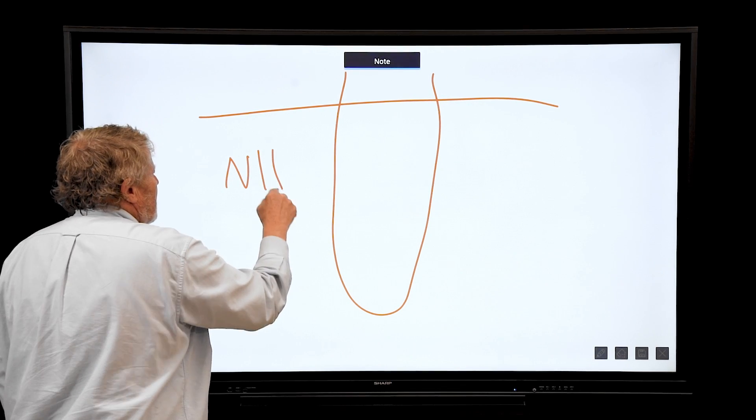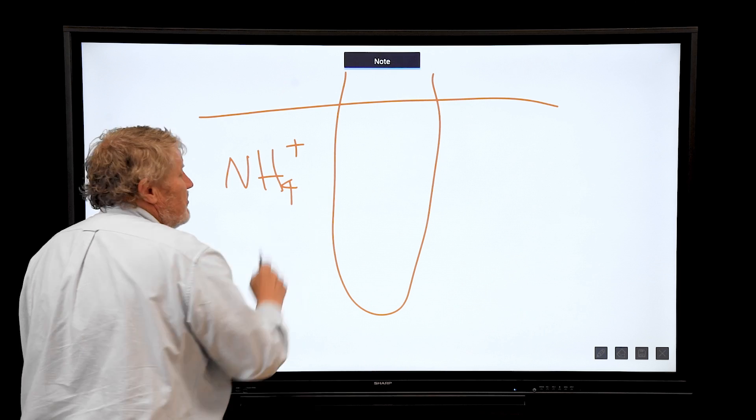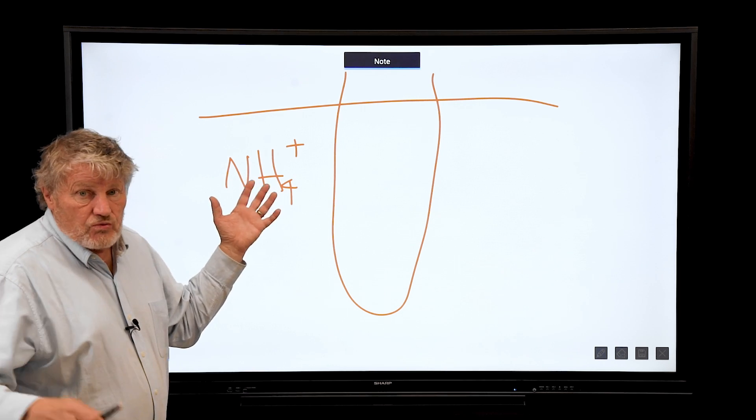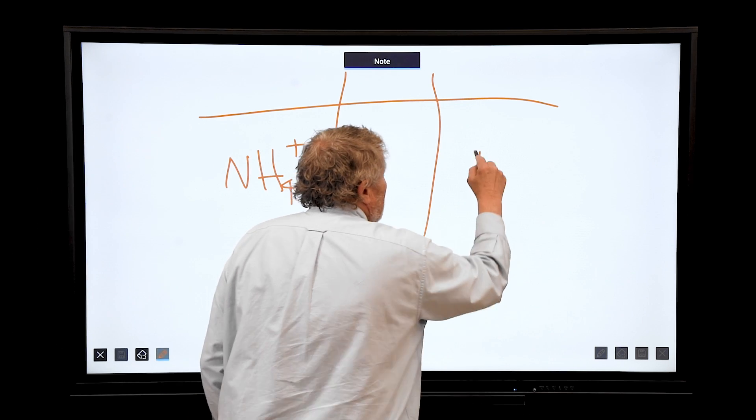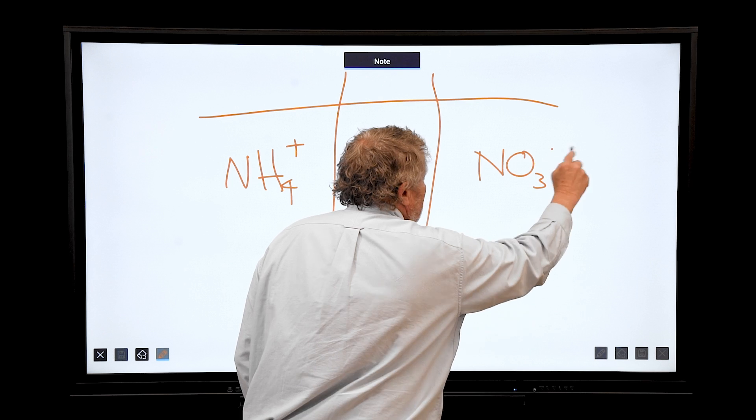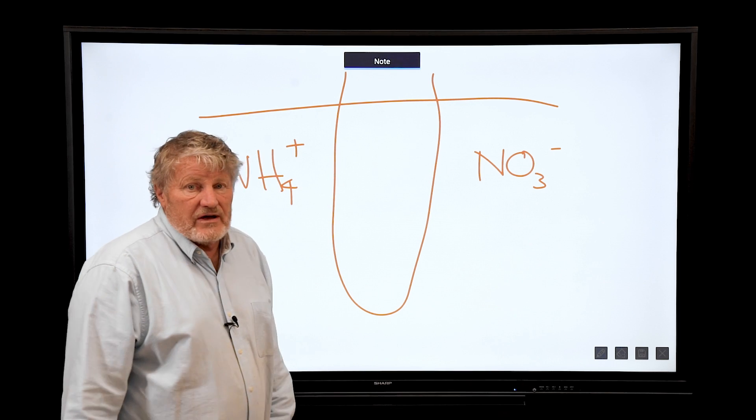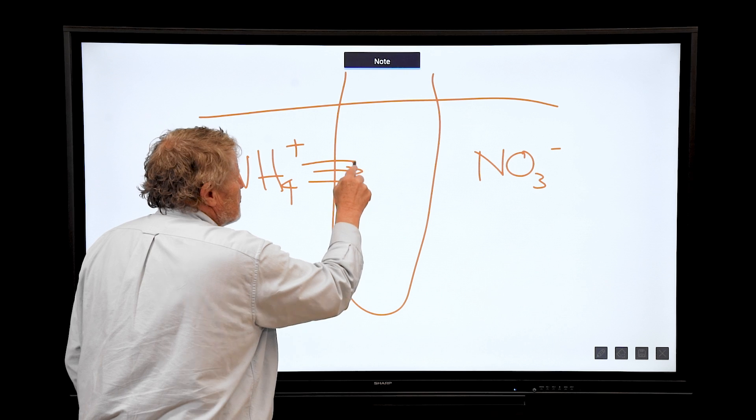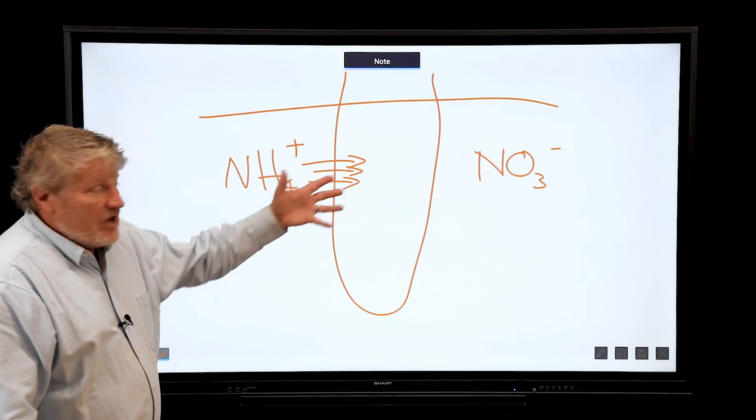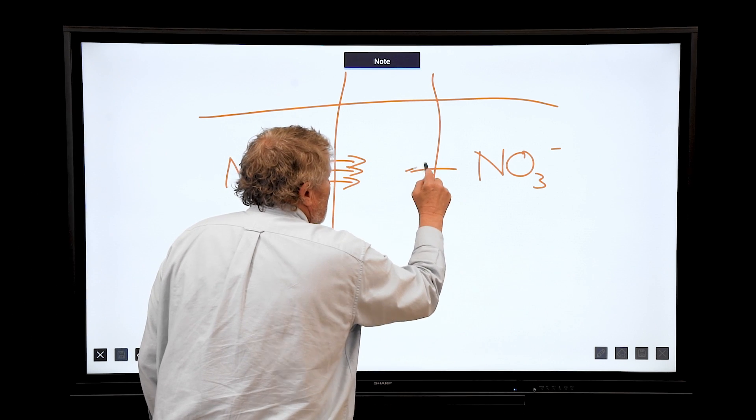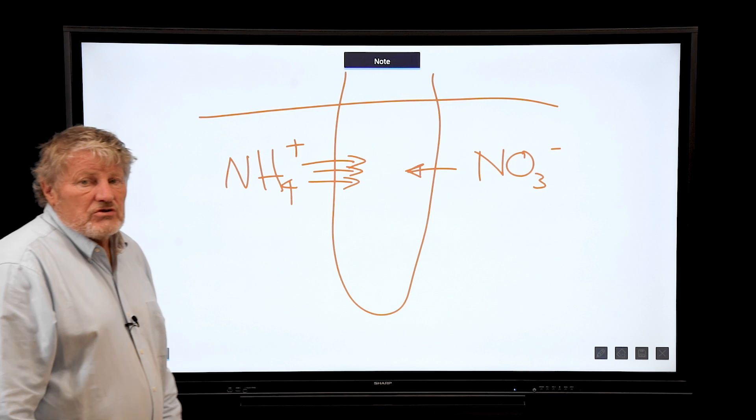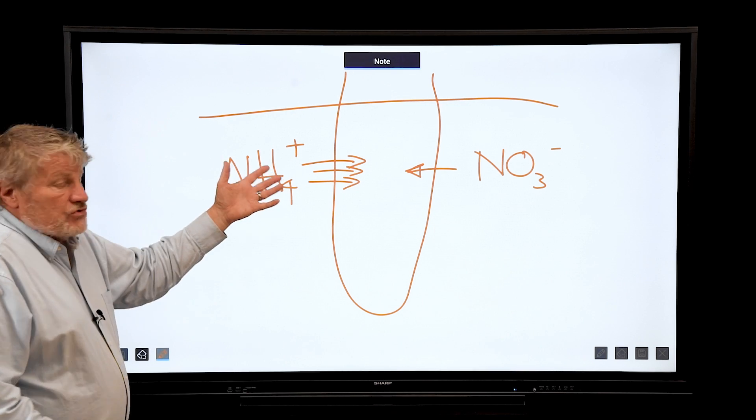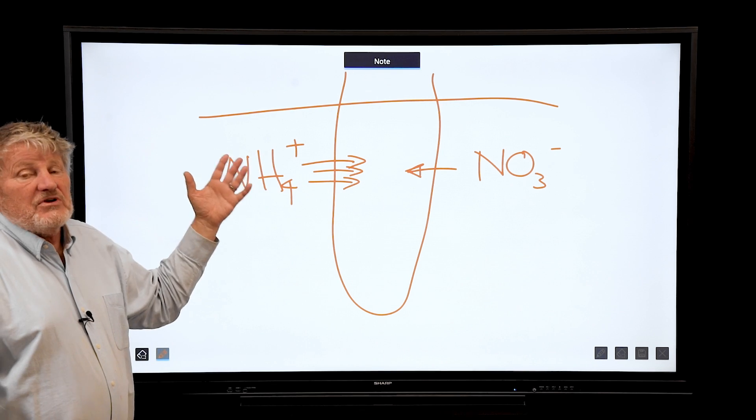Over here we have ammonium nitrogen, which we use widely in fertilizers, and over here we have nitrate fertilizers. Ammonium first of all is taken up super fast by plants, so I'm drawing three arrows over there. Nitrate is taken up more slowly, so you think great, use ammonium, it's taken up fast.